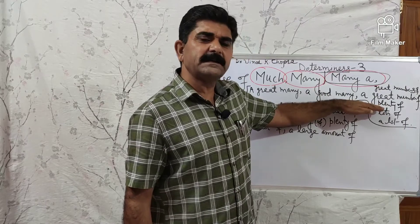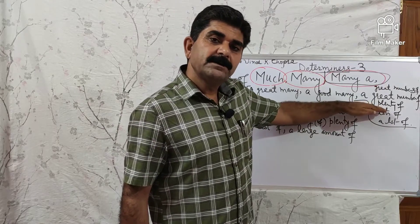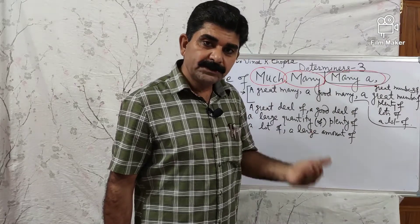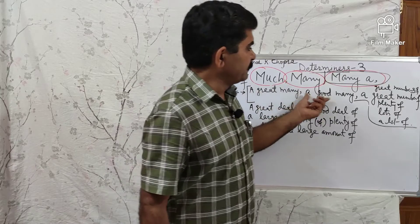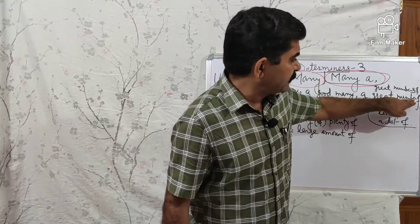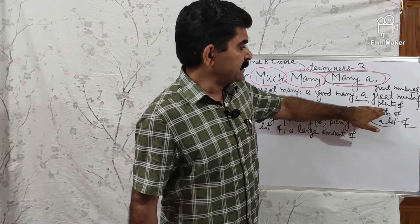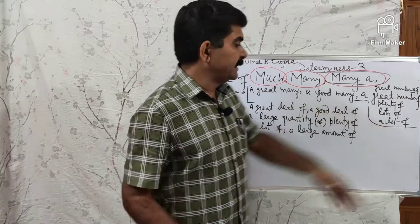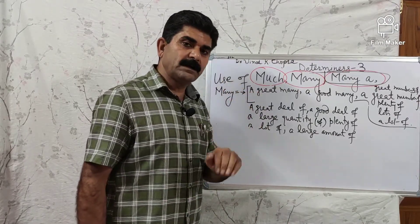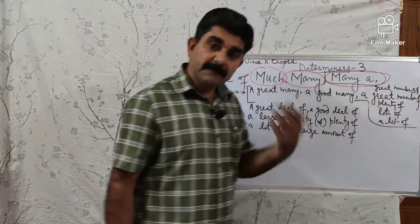If your teacher says the use of many is wrong in an affirmative sentence, you can say: 'I have read a great number of books written by Shakespeare,' or 'great numbers of,' or 'plenty of,' or 'lots of,' or 'a lot of.' These all mean the same as many. Now, what to use in place of much in affirmative sentences? Use: a great deal of, a good deal of, a large quantity of — 'There is a large quantity of water in this river' — plenty of, a lot of, a large amount of.